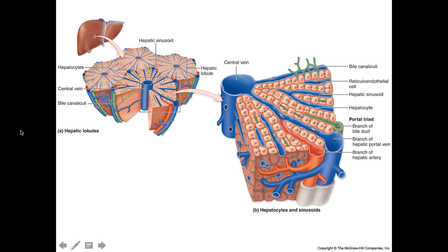The first structure is the liver. This figure from the textbook shows the basic anatomy and histology of the liver. The liver is made up of functional units referred to as lobules. This represents a hepatic lobule, and each lobule has a central vein in the middle. On the corners of these lobules, you find three structures, often referred to as the portal triad.